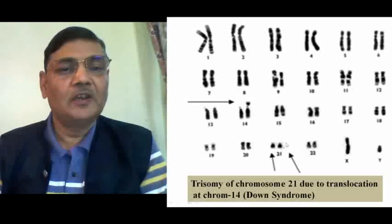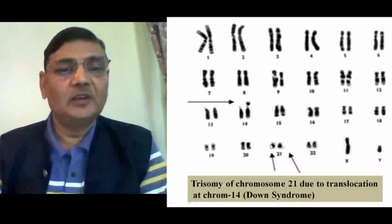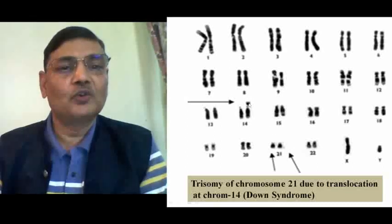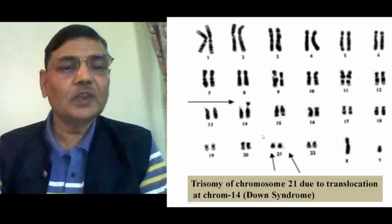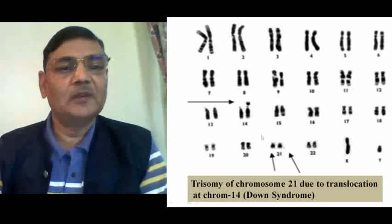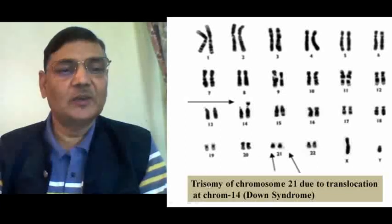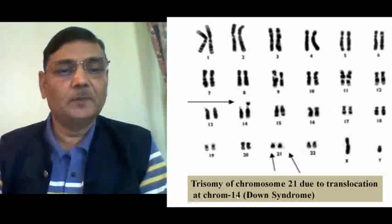If chromosome 21 is found in three copies — maternal, paternal, and one extra — that is a case of trisomy. But here, an independent third chromosome 21 is not present; rather, its major portion is translocated to chromosome 14. We know that trisomy of chromosome 21 results in Down syndrome. In this case too, the individual having this chromosome complement will suffer from Down syndrome because there is trisomy of chromosome 21 due to translocation at chromosome 14, and the phenotype will be exactly similar to Down syndrome.